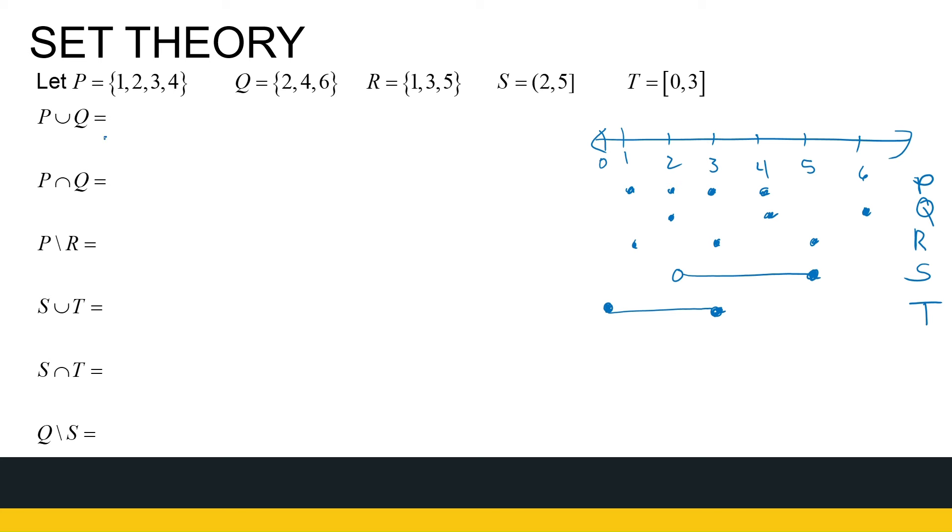Now, if I want P union Q, that means look at P and Q. It's everything from P or from Q. So whatever's in P union Q can come out of either of them. So what we do is we throw them all together, P and Q. So it's one, two, three, four. Q has two and four. They're already there, and six. So P union Q is everything from P and Q together.